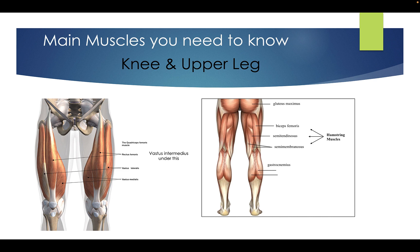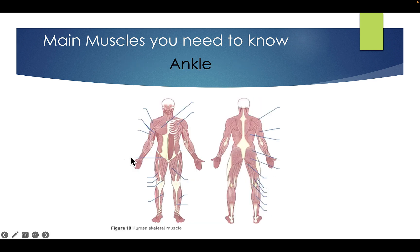We'll also talk about the vastus intermedius, but you actually can't see this because it's slightly behind the rectus femoris — in most diagrams you can't see it because it is behind this muscle. If we're breaking down the muscles in the ankle, we've got our soleus, our tibialis anterior, and our gastrocnemius, creating plantar flexion and dorsiflexion.